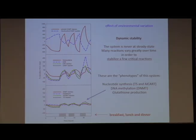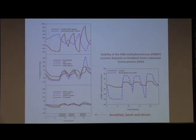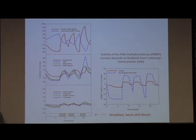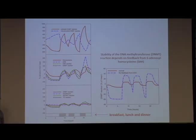We can demonstrate that stability is due to some of these feedback interactions. If we look at the DNA methylation reaction and remove only one of those feedback interactions, all of a sudden DNA methylation capacity starts to fluctuate with meals. In the presence of those feedback reactions, DNA methylation capacity remains constant, independent of the supply rate of methyl groups — which is a nice feature. The stability of these phenotypes is not because the system is at steady state — these are dynamically maintained phenotypes. The system is working like crazy, like in all homeostatic systems, to maintain that constancy. That's a really important thing to recognize.